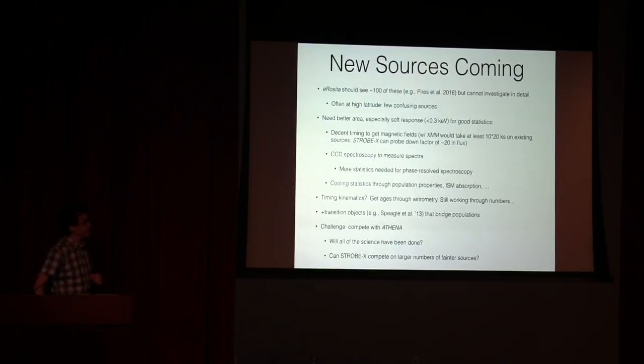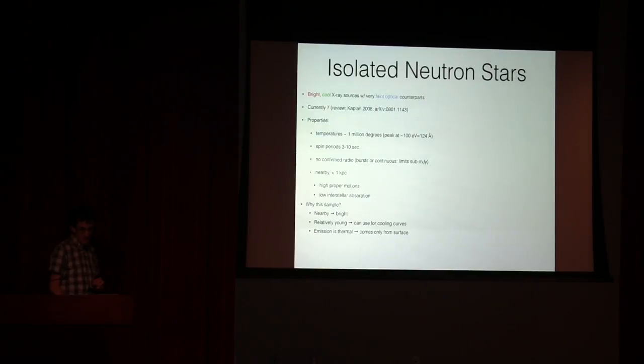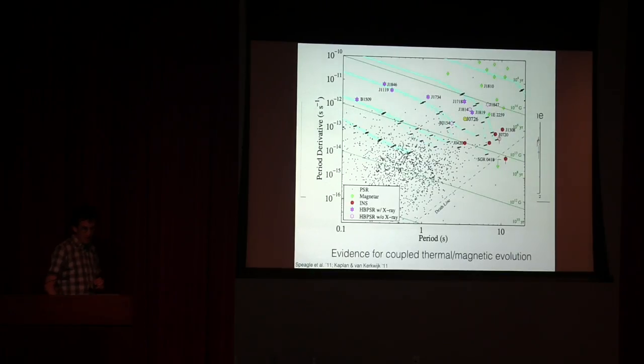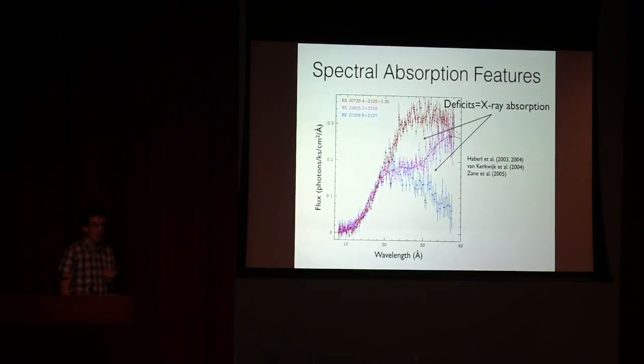It's also important to look at transition objects, radio pulsars that bridge the populations of these various classes. Just going back to the P-P dot diagram here, there's the yellow circle there that's an object that is currently emitting as a radio pulsar, but it looks like it might be evolving into one of these objects as its magnetic field winds down. It will turn just into a cooling object, or something that you might see from a different angle would again look just like a cooling object.